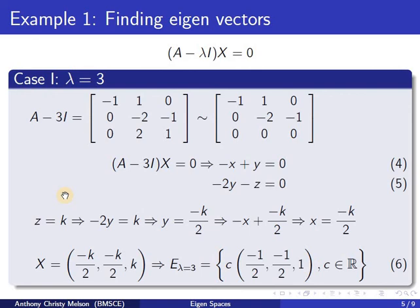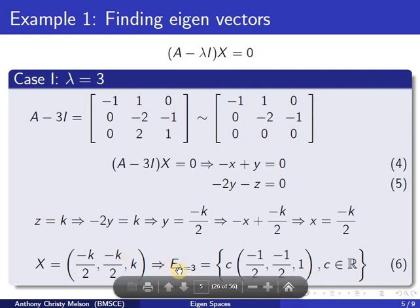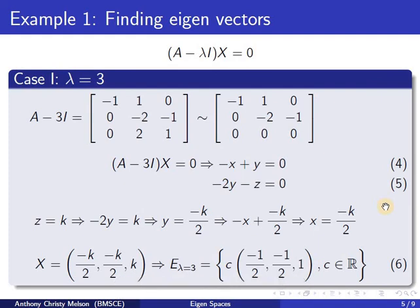Along with that, if we include the zero vector, that gives us the Eigen space. Therefore, the Eigen space E corresponding to lambda equal to 3 is given by scalar multiples of (minus 1/2, minus 1/2, 1), where c is any real number. We consider c to be a real number because the mapping t is from R3 to R3, therefore the field is the set of reals.